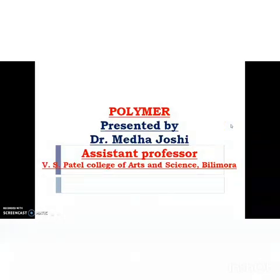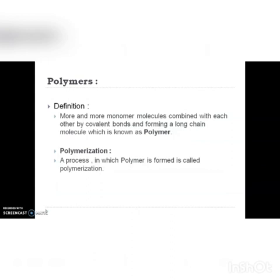In this video we are going to discuss the types of polymers, their polymerization techniques, manufacture, properties, and uses. The term polymer is commonly used in the plastic and composite industry. Polymers are found in common household goods, in clothing and toys, in construction materials, and as insulation materials. A polymer is defined as monomer molecules combined with each other by covalent bonds, forming a long chain molecule. The technique to form a polymer is called polymerization.